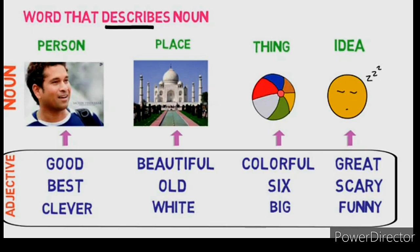Let's take some examples. We can describe Sachin like: Sachin is a good person, Sachin is the best cricketer. Here good and best are adjectives that are describing the noun Sachin.